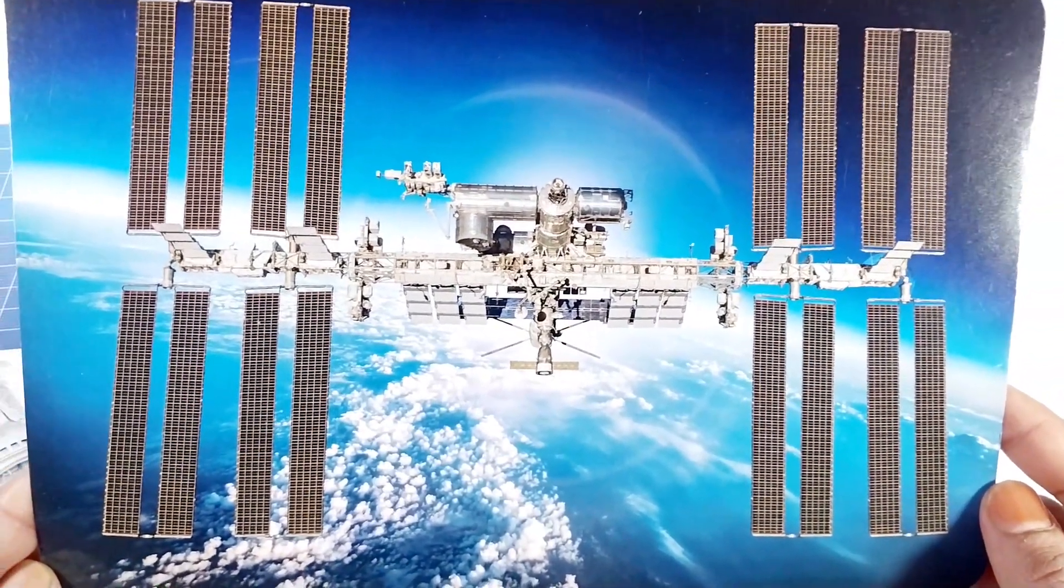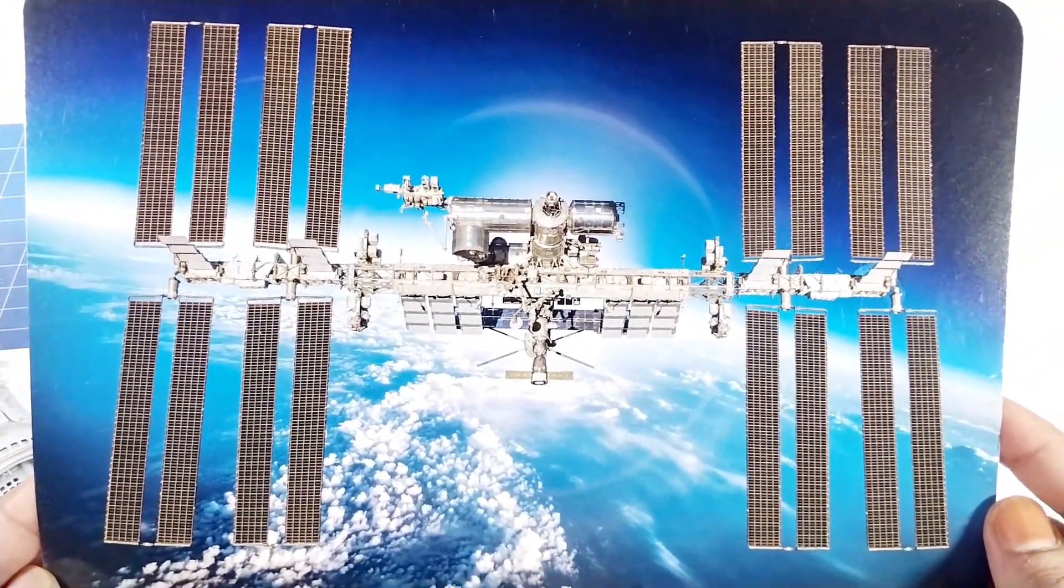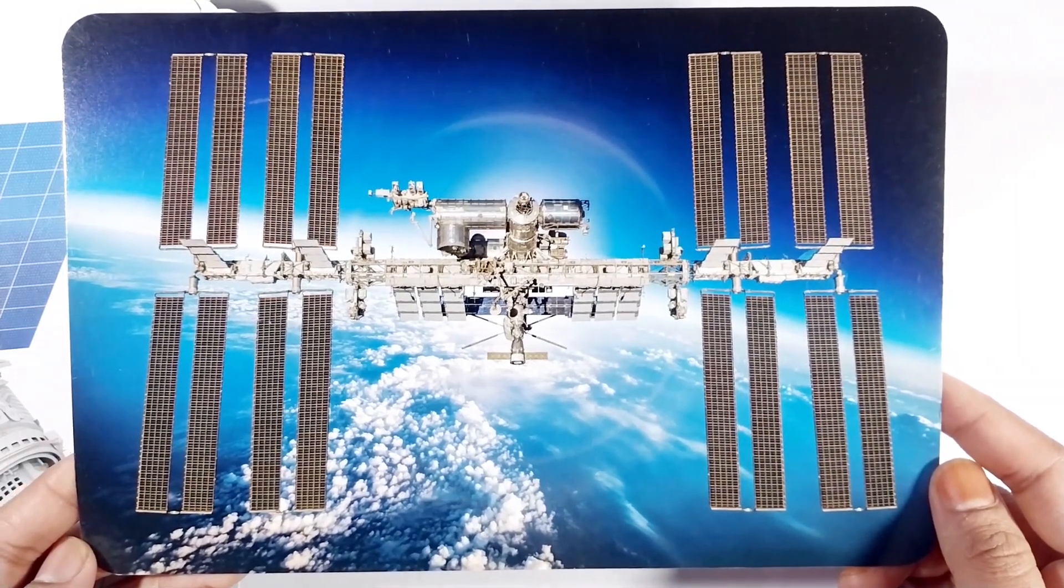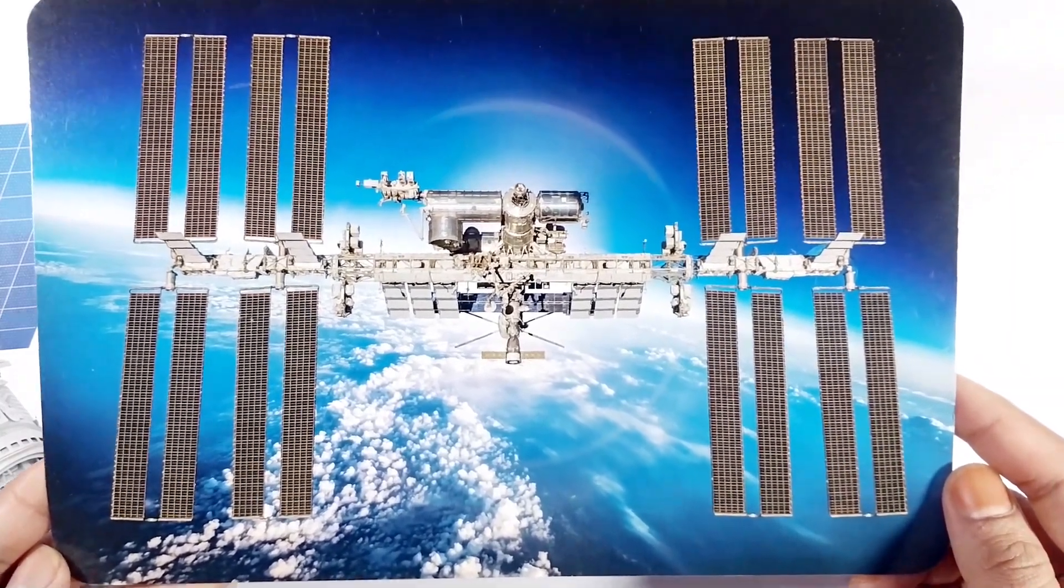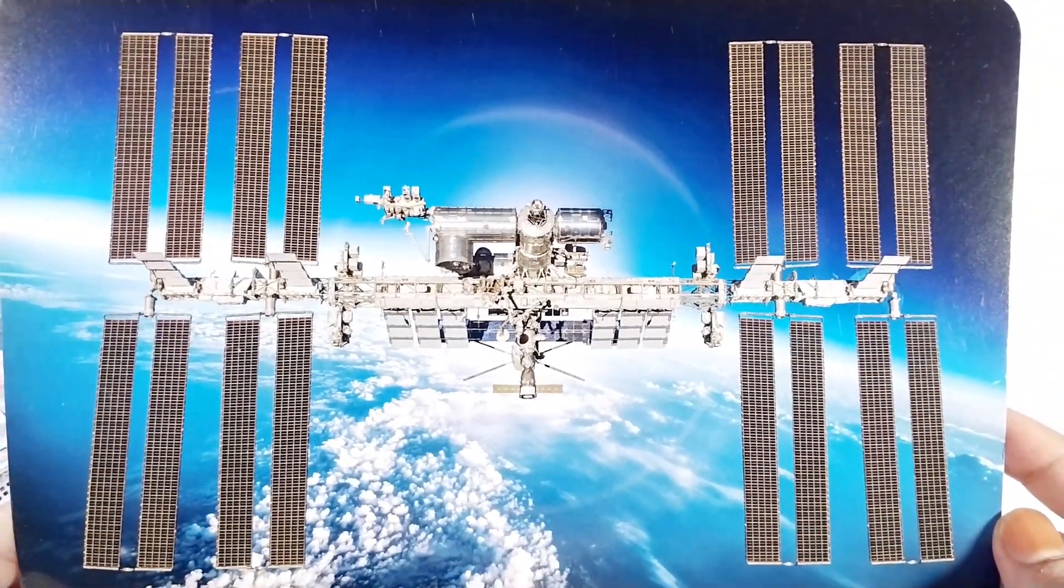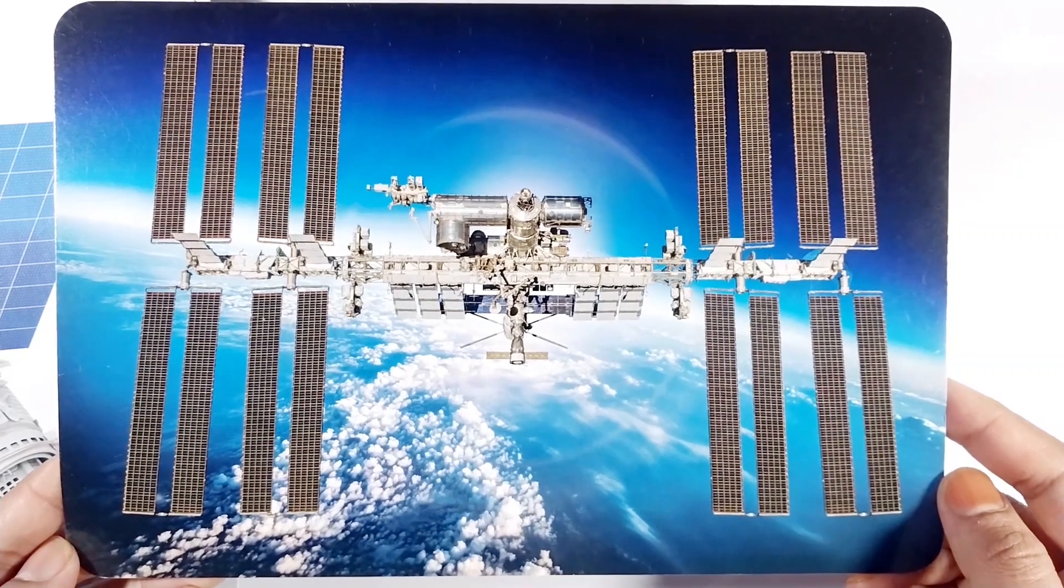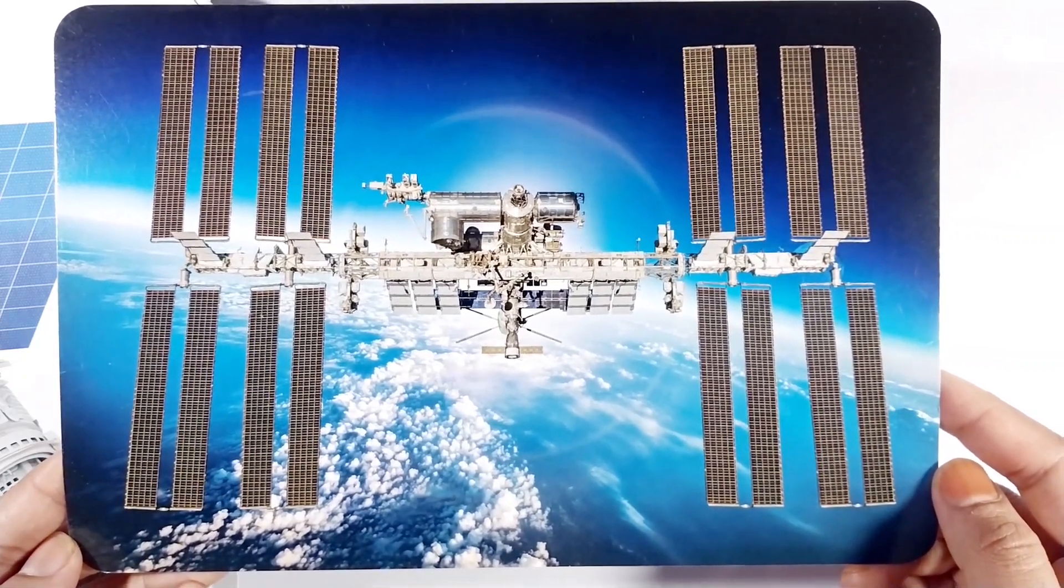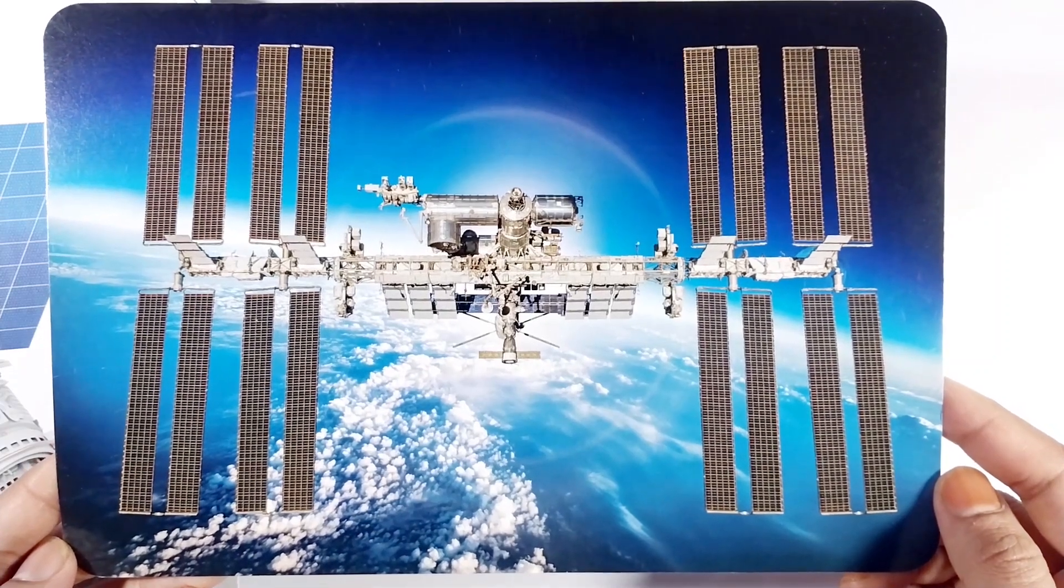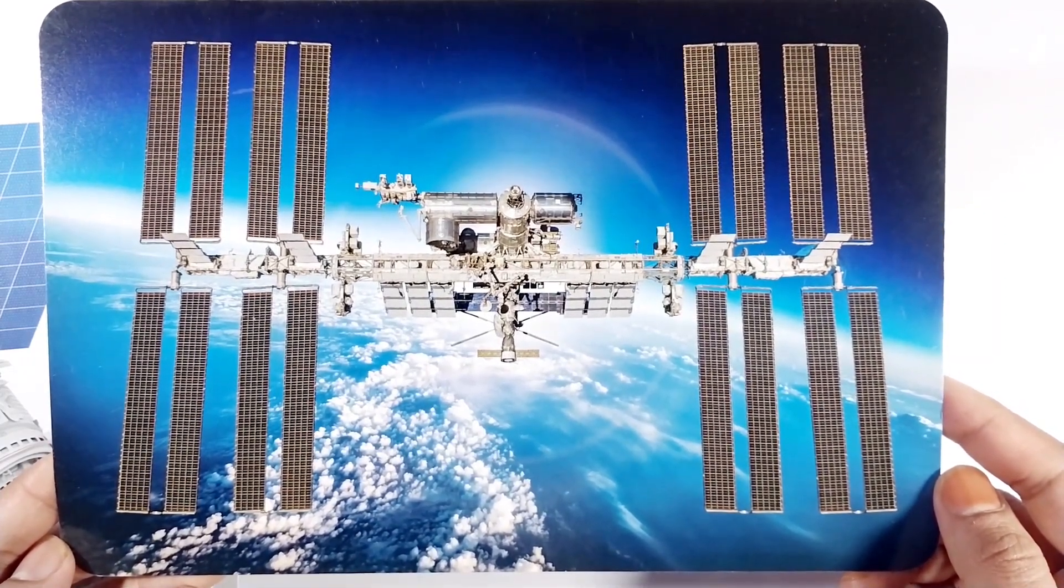The International Space Station is a large spacecraft where astronauts live and work while in space. It orbits Earth and serves as a unique laboratory for scientific research and international cooperation. It's often visible from Earth as a bright moving light in the night sky.